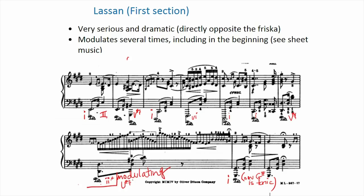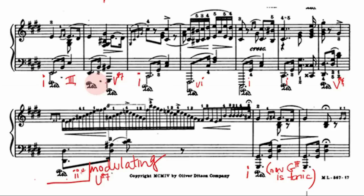We are of course going to start with the Lassan, because it's the first part — very serious and dramatic, in direct opposition to the Friska which is super fast and pure fun. We'll take a quick listen to the beginning of the Lassan to get a sense of its character. You'll notice there's going to be modulation — I've marked some of the harmonies on the sheet music. The I chord would be representative of C-sharp because it's in the key of C-sharp minor, and so on. You can see where it changes keys and your ears might be able to pick up on it as well.